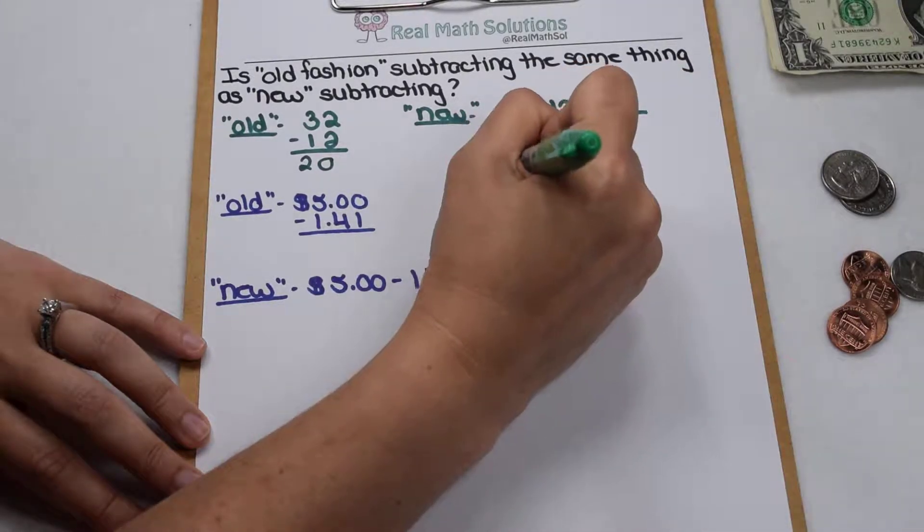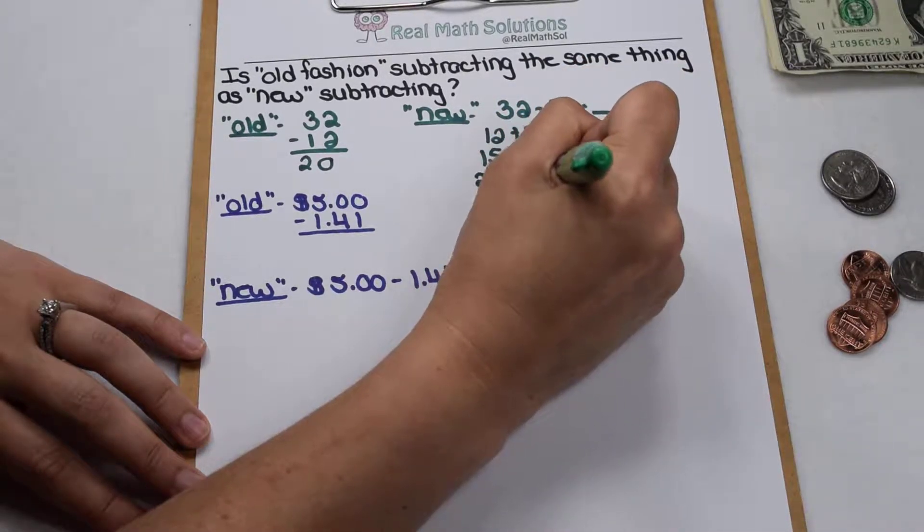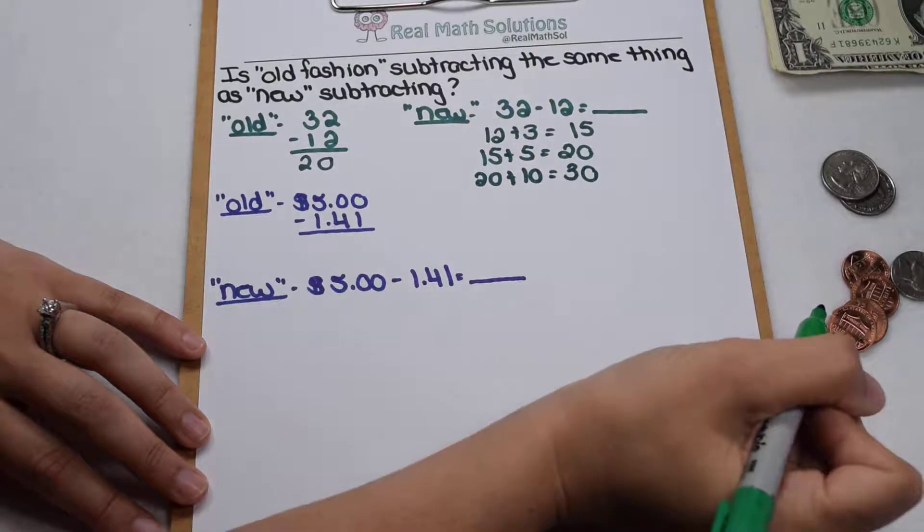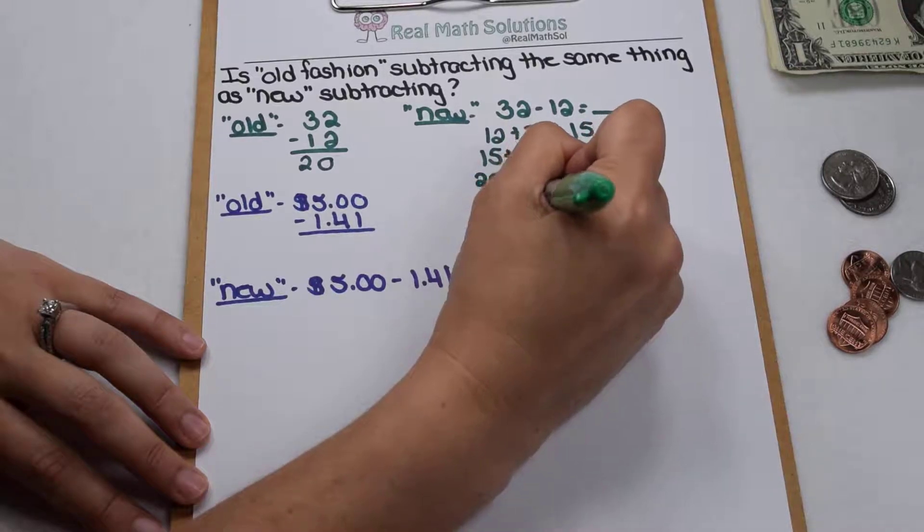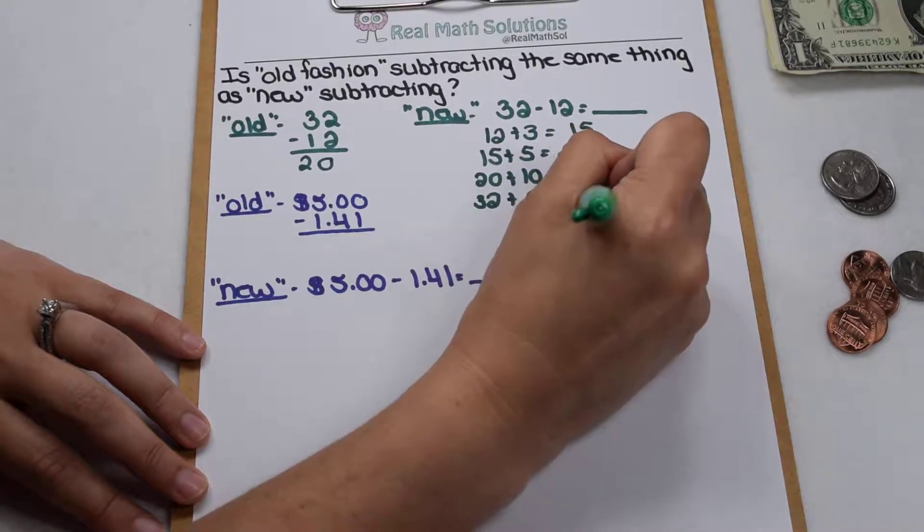From 20, I know I need to jump up to 30 so I can add another 10 to that and that takes me to 30. 30 is almost 32 so I just need to add another 2 to that and that takes me up to 32.